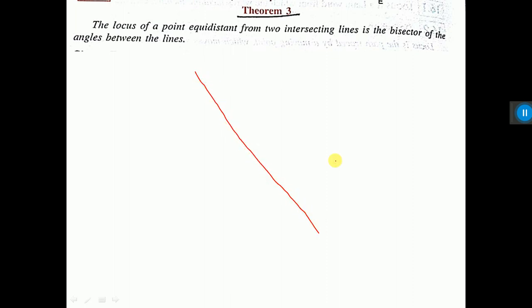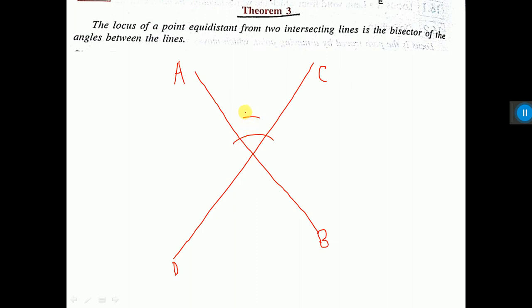What is the meaning of this? Let me explain. The locus of a point equidistant from two intersecting lines — let us draw two intersecting lines. AB and CD are two intersecting lines. The bisector of the angles between the lines: if you bisect this angle, you know how to bisect — from here draw one arc, from here another arc, then join and produce, then it will be the bisector. Let's say KL.